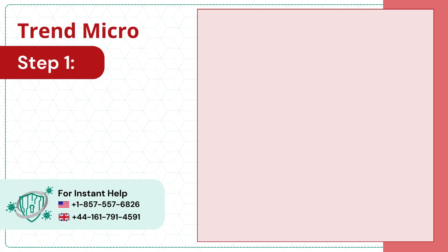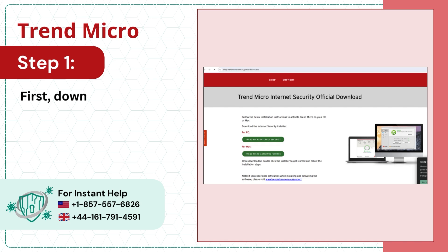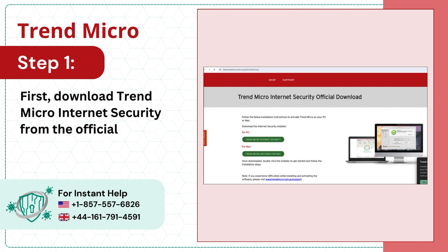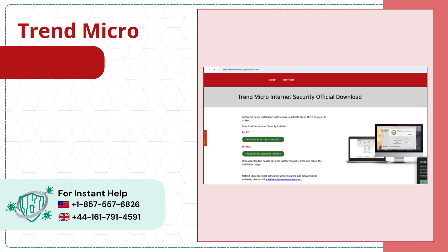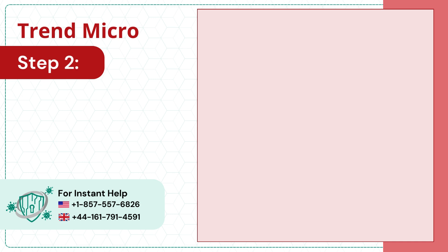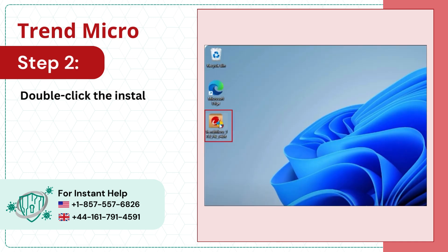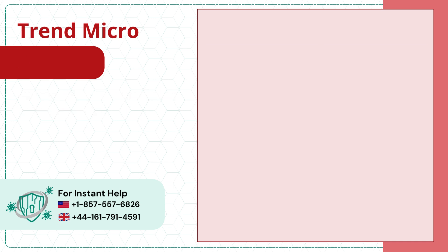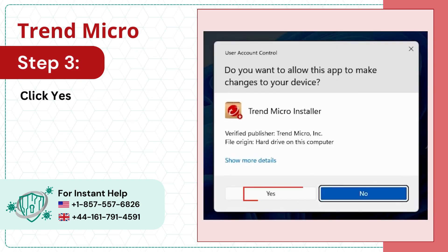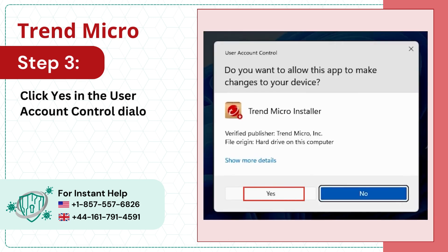Step 1: First, download Trend Micro Internet Security from the official website. Step 2: Double-click the Installation Setup Package. Step 3: Click Yes in the User Account Control dialog box to start the installation.